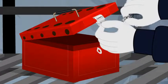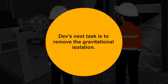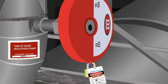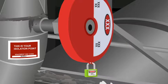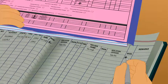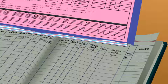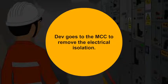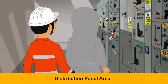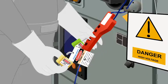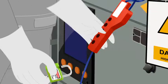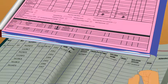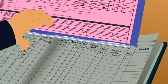Dev retrieves his keys and the permit from the lockout box. He removes his department lock first, then VJ removes his lock and signs on the isolation logbook. Dev also signs. VJ then signs on the permit. Dev and Jeet go to the distribution panel area, where Jeet removes Dev's yellow lock and then his own green lock for all the electrical energies he isolated. Jeet enters details in the isolation logbook confirming the permit is closed, Dev signs the register, and Jeet signs on the permit.